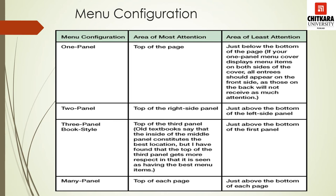The three-panel book style is the third variety of menu design. The area of most attention is the top of the third panel. Old textbooks say the inside of the middle panel is the best location, but the top of the third panel gets more respect as it is seen as having the best menu items. Just above the bottom of the first panel has the least attention. For many panels, the top of each page gets the most attention and just above the bottom of each page gets the least.